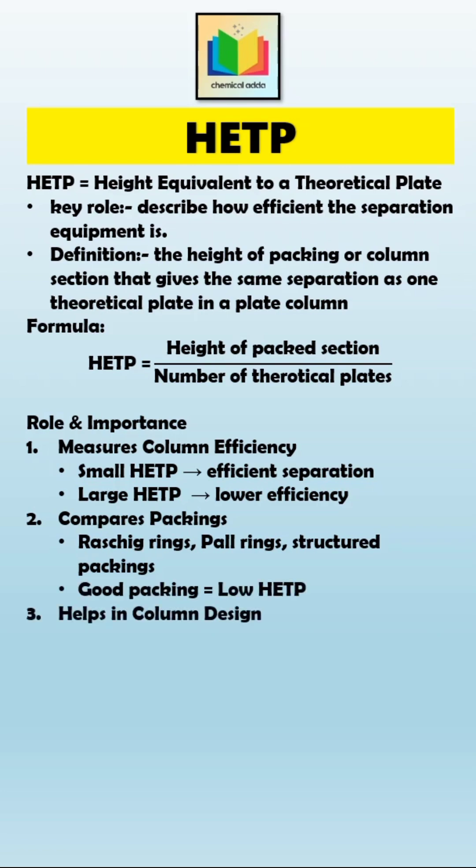HETP also helps in column design. For a given separation, we can find how many theoretical plates are required from the equilibrium data. Once we know that number, we multiply it by HETP to get the actual height of the column. So: column height equals number of plates times HETP.